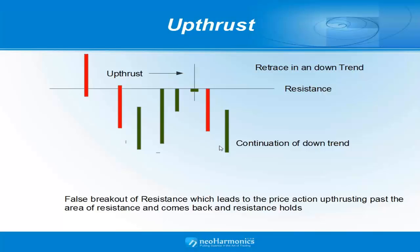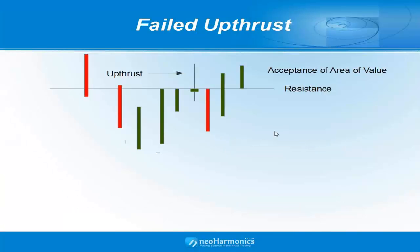Up thrusts are only to be traded in downtrending markets. Looking at a failed up thrust: the up thrust comes up to resistance, breaks it, we have a false breakout of that area, and then it briefly goes down. But instead of continuing down, price starts trading back into that area and we have acceptance of it as the value area, showing a failed up thrust.